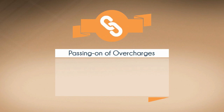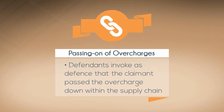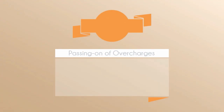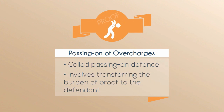On the other side of the case, under the new damages directives, defendants can invoke as a defense the fact that the claimant has passed the overcharge down with the supply chain. This is called the passing-on defense and involves transferring of burden of proof to the defendant.